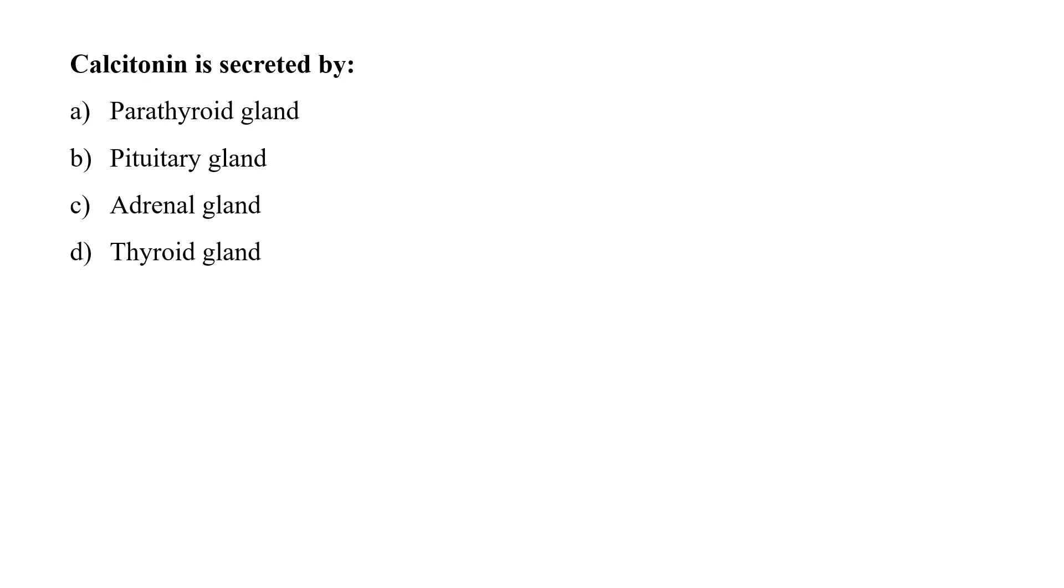Calcitonin is secreted by parathyroid gland, pituitary gland, adrenal gland, or thyroid gland. Calcitonin is a hormone that is produced and released by the parafollicular cells of the thyroid gland. This hormone is basically responsible to regulate the calcium ion level and phosphate in the blood. So option D is the correct answer.